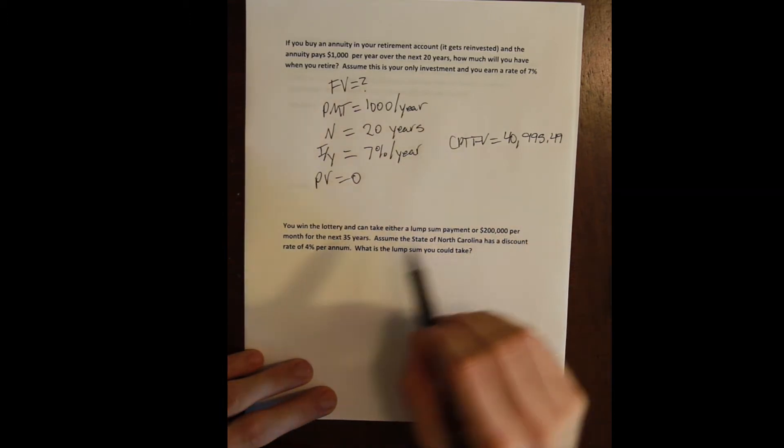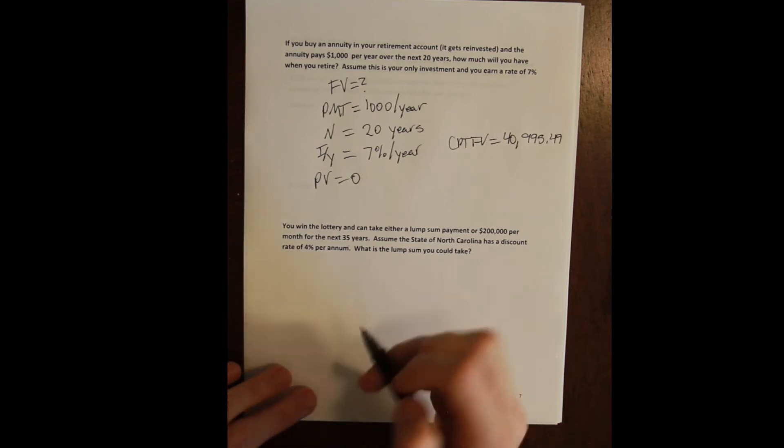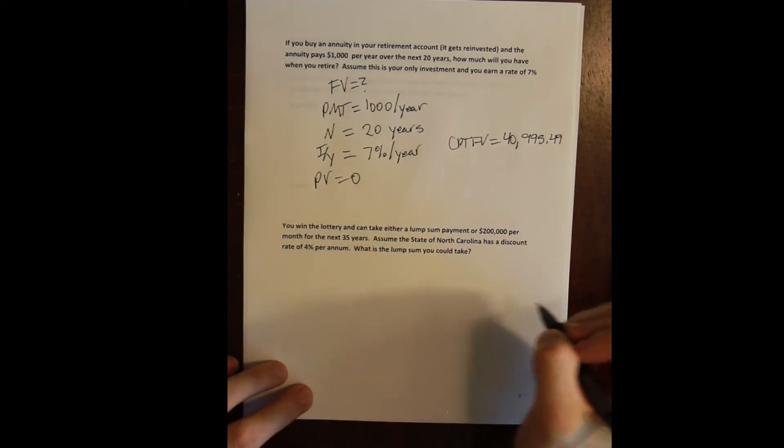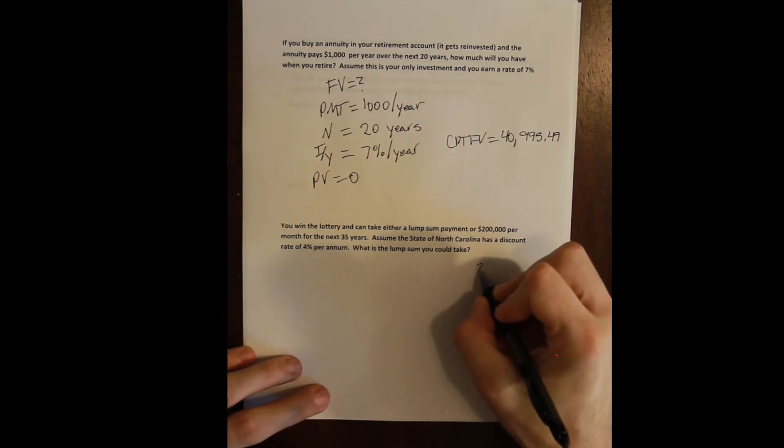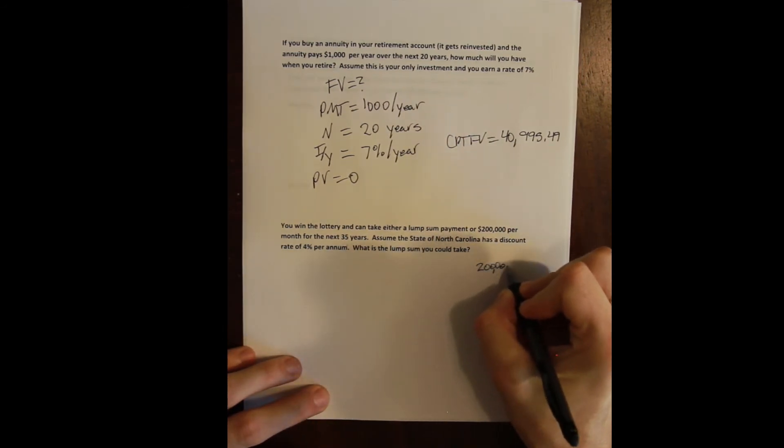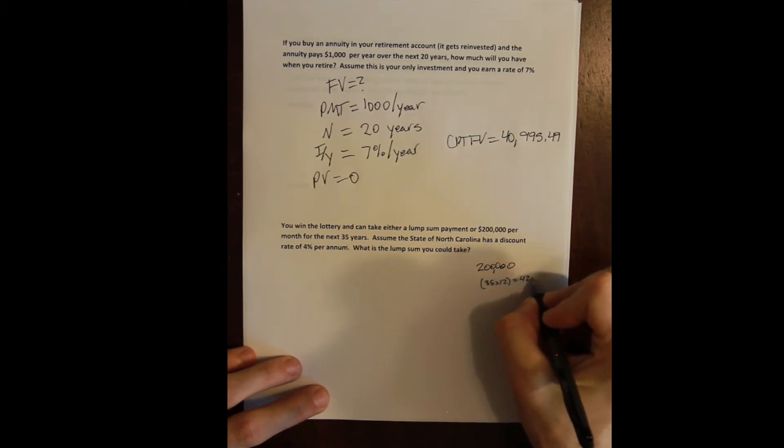Or you're going to win the present value of that annuity. So let me show you, the billboard is going to show you this value. $200,000 per month for 35 years times 12 months is 420 months.